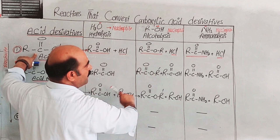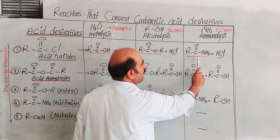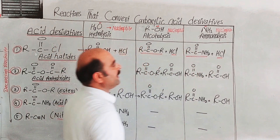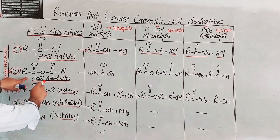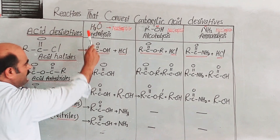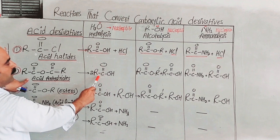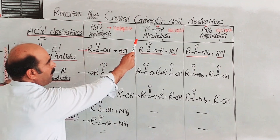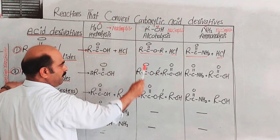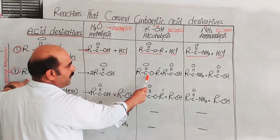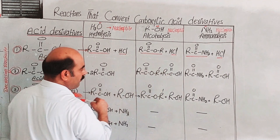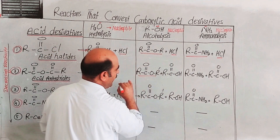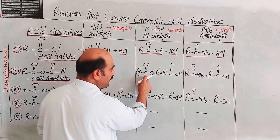When treated with ammonia, the reaction is called ammonolysis, and the product is acid amides. Acid anhydrides undergo hydrolysis to give carboxylic acid. Acid anhydrides also undergo alcoholysis to give esters.